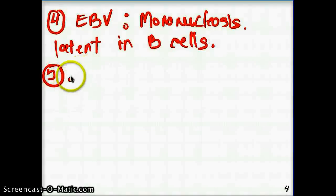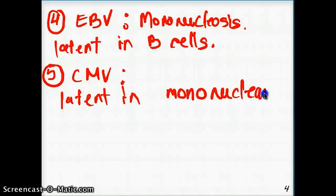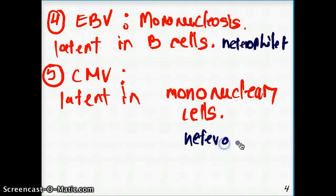Followed by CMV. These are latent in mononuclear cells. One thing that I want to talk about between CMV and EBV is that EBV is going to be heterophile positive. And this is going to be heterophile negative. These are the two specific differences between EBV and CMV.